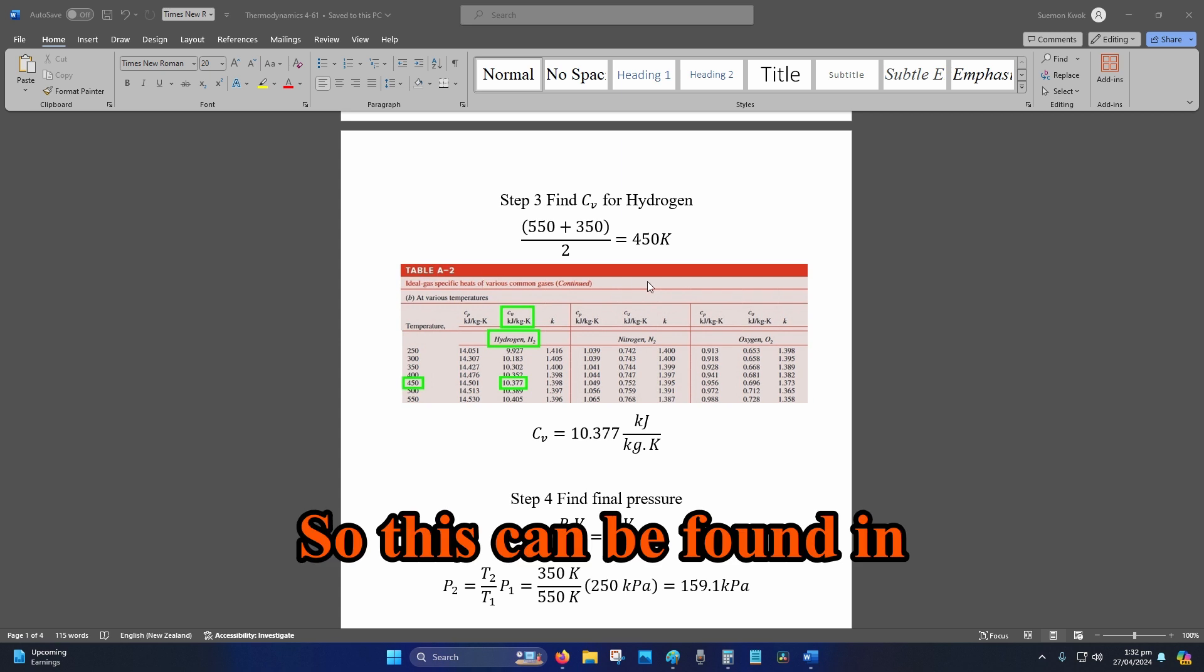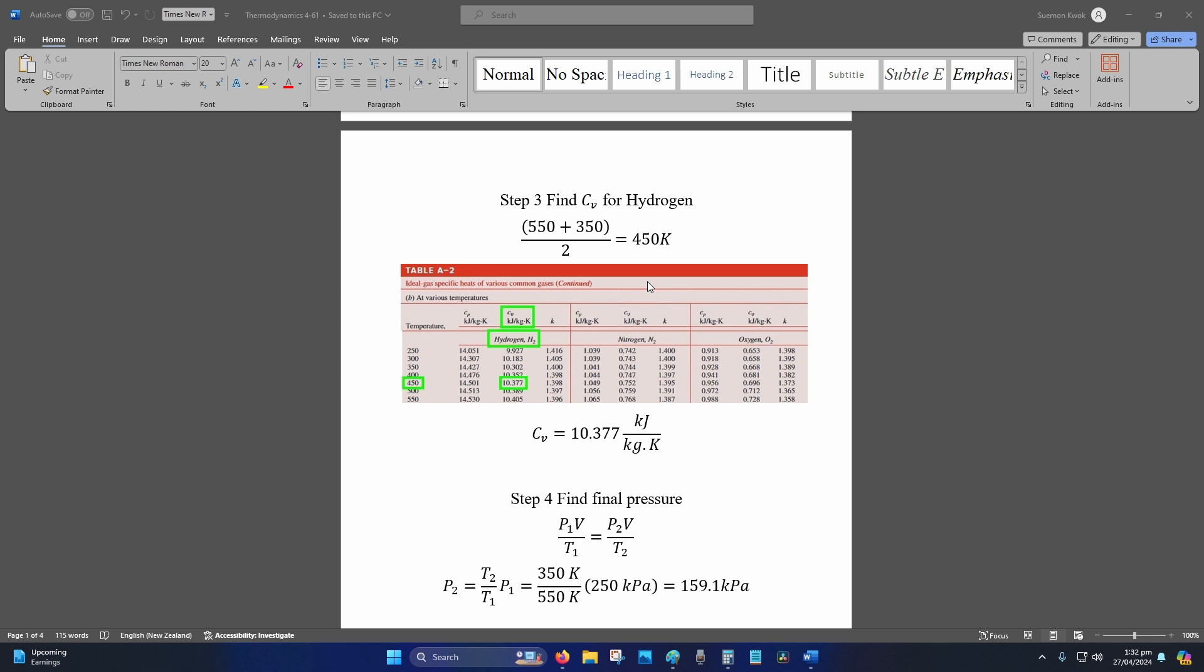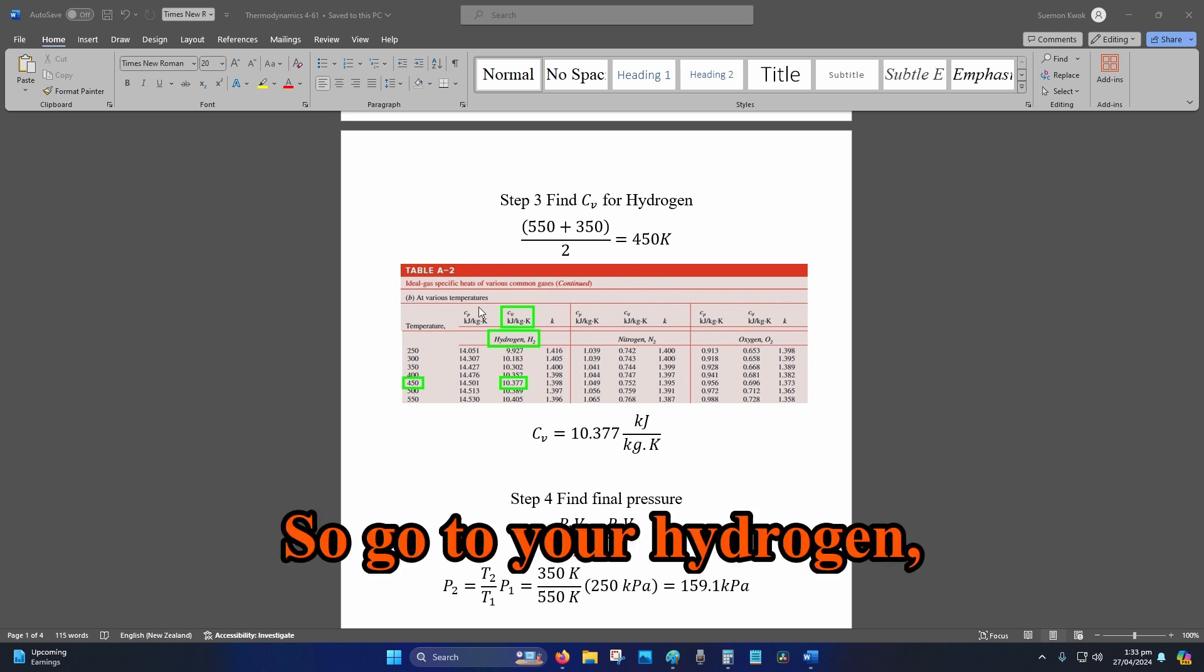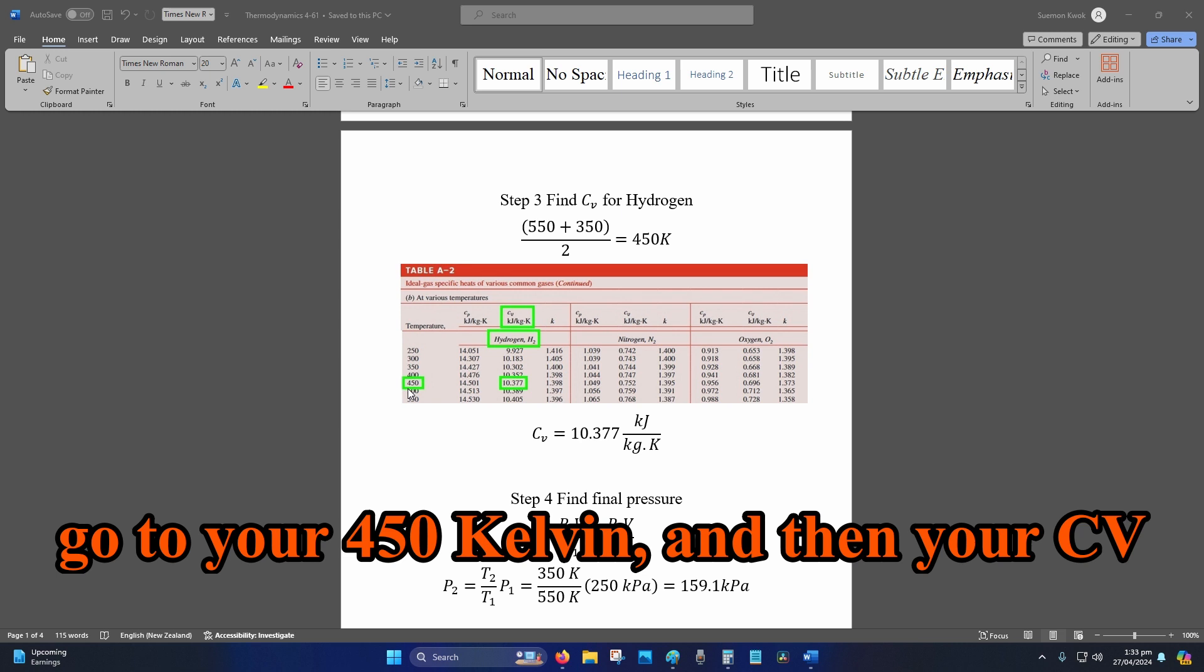This can be found in your table A-2, part B or part C, depending on your textbook. Go to your hydrogen, go to your average CV, go to your 450 Kelvin.